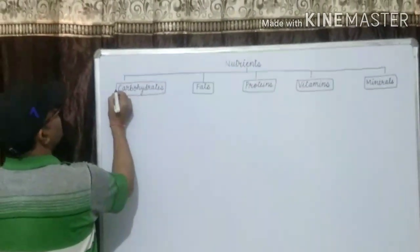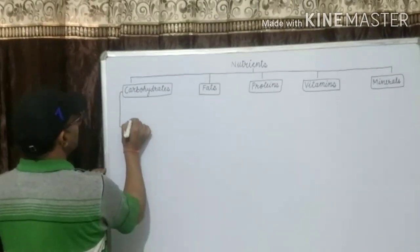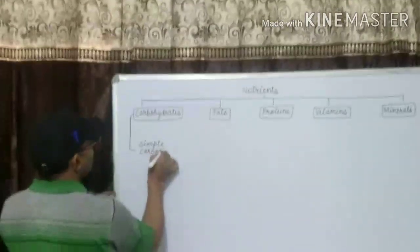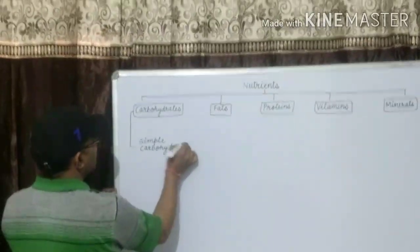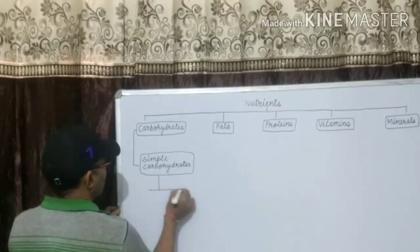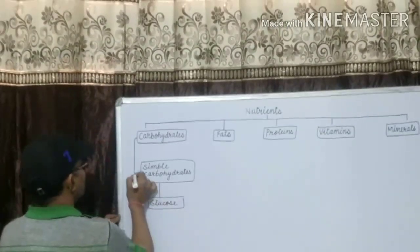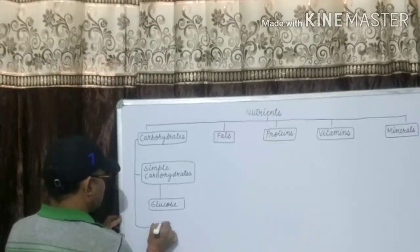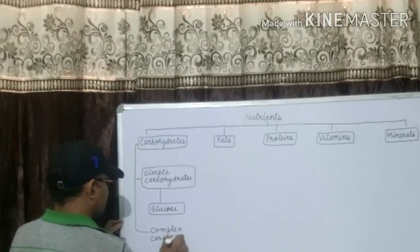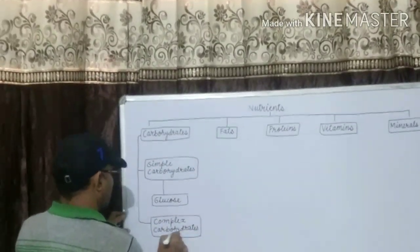Carbohydrates are 2 types: number 1, simple carbohydrates, example glucose. 2nd is complex carbohydrates, example starch.